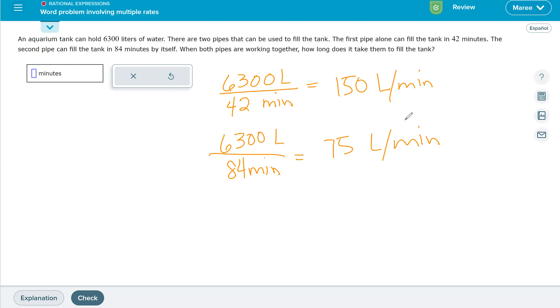When both pipes are working together, how long does it take them to fill the tank? When they're working together, they're going to be able to pump in, you'll add 150 and 75, at 225 liters per minute.